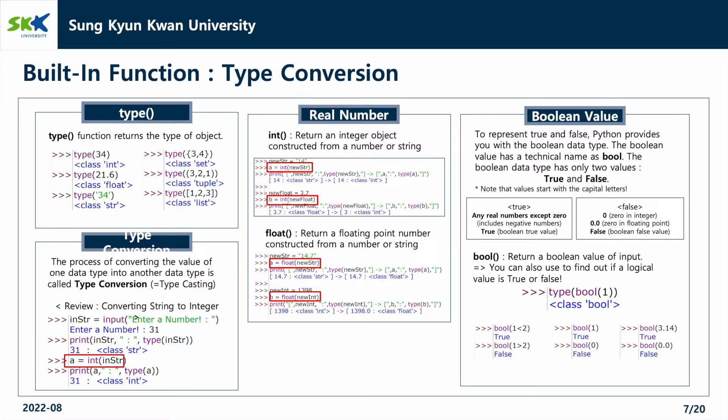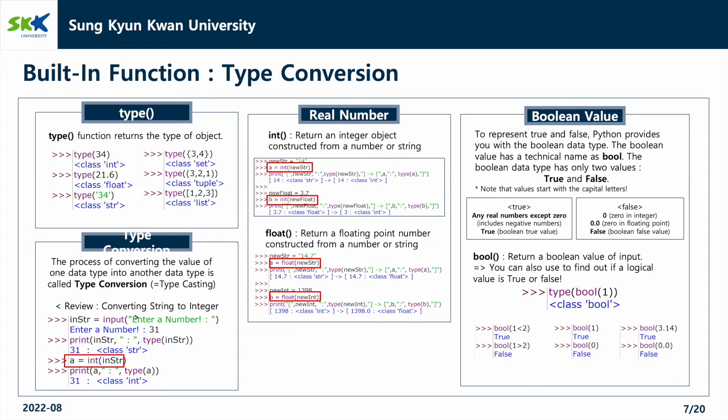The last one is the boolean value. To represent true or false, Python provides you with the boolean data type. The boolean value has a technical name as bool. The boolean data type has only two values, true and false. When true is returned, it is a real number other than zero or a value of true. Conversely, when false, it is 0 or the value of false. So using the bool function, it returns a boolean value of input. You can also use it to find out if a logical value is true or false.